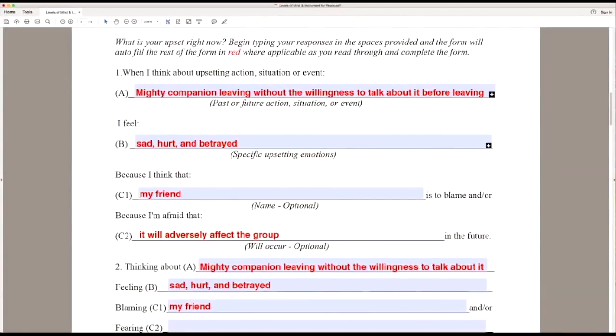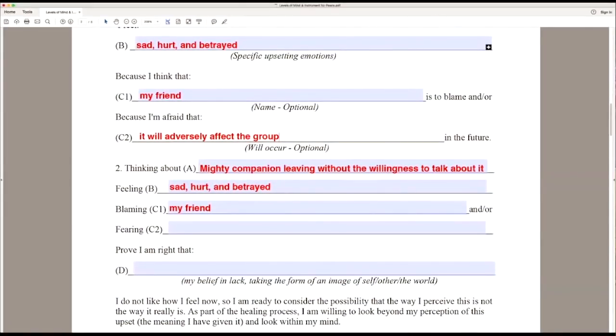So number two, thinking about mighty companion leaving without the willingness to talk about it, feeling sad, hurt, and betrayed, blaming my friend and fearing that it will adversely affect the group. Prove that I'm right that.